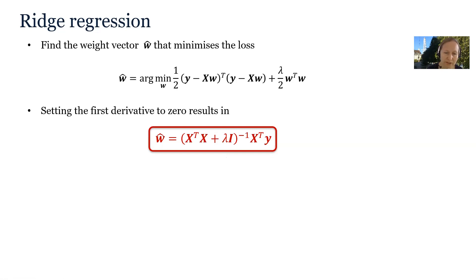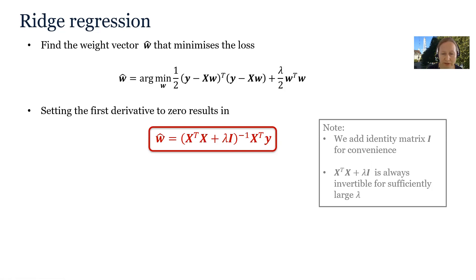We also need to invert a matrix to calculate the solution to ridge regression, but this time we add the value lambda to the diagonal of the matrix X-transposed X before inverting it. This will regularize the solution to help prevent overfitting, and there is always a sufficiently large lambda that will make this matrix invertible.